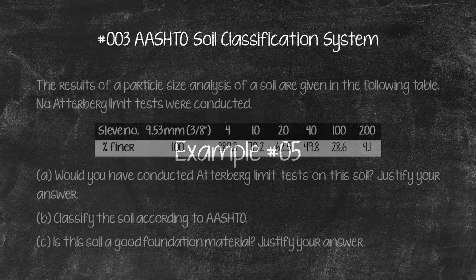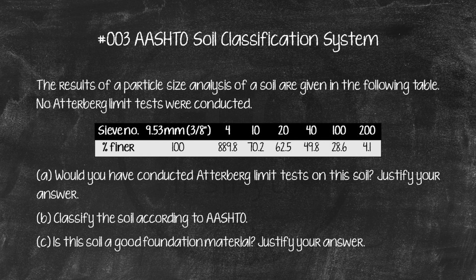Example number 5. The results of a particle size analysis of a soil are given in the following table. No Atterberg limit tests were conducted. A. Would you have conducted Atterberg limit tests on this soil? Justify your answer. B. Classify the soil according to Ashto. C. Is this soil a good foundation material? Justify your answer.